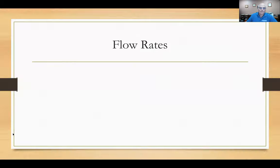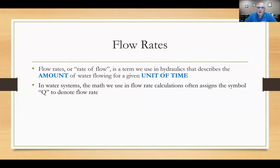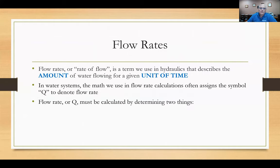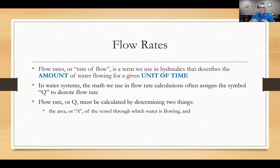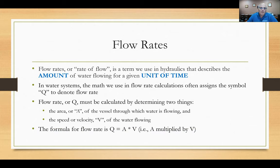How about flow rates — Q? The flow rate or rate of flow is a term in hydraulics describing the amount of water flowing per unit of time. In water systems, we assign the symbol Q to denote flow rate. Flow rate Q must be calculated by determining two things: the cross-sectional area across which the flow is moving, and the speed or velocity at which the water is actually flowing. The formula is Q = A × V, area multiplied by velocity.